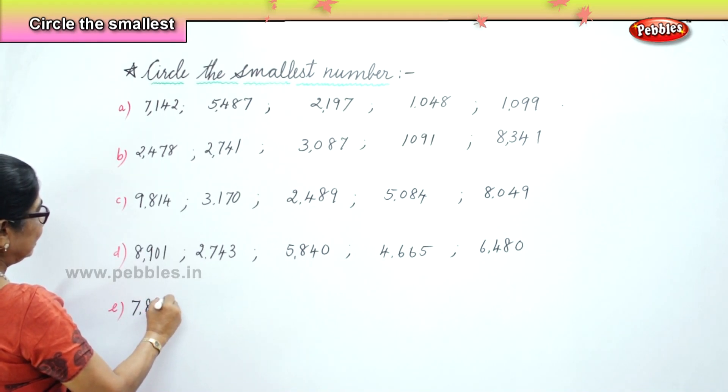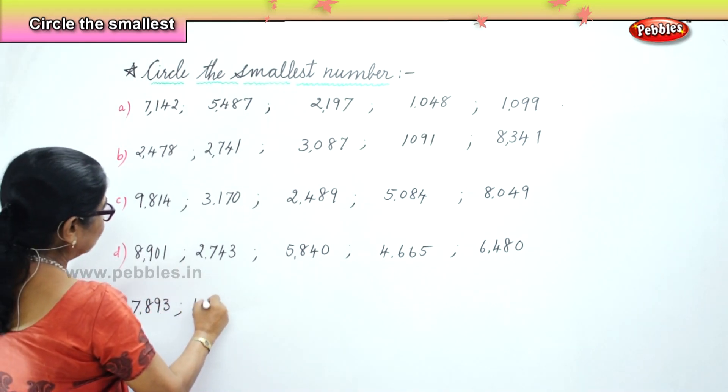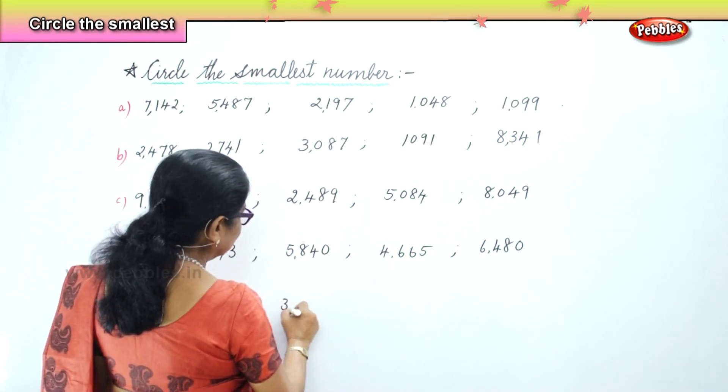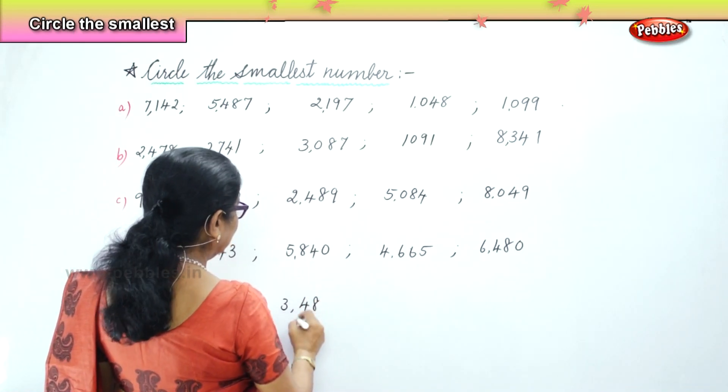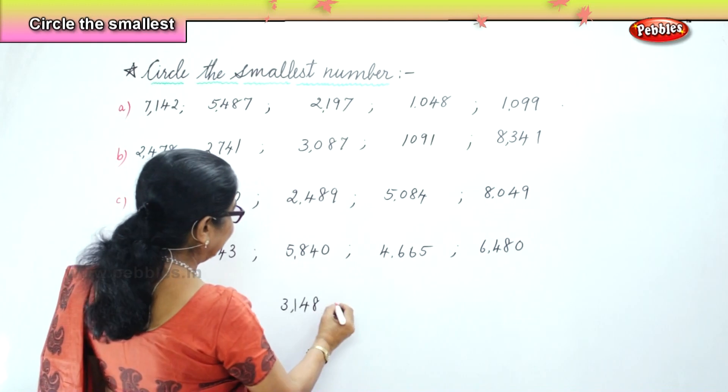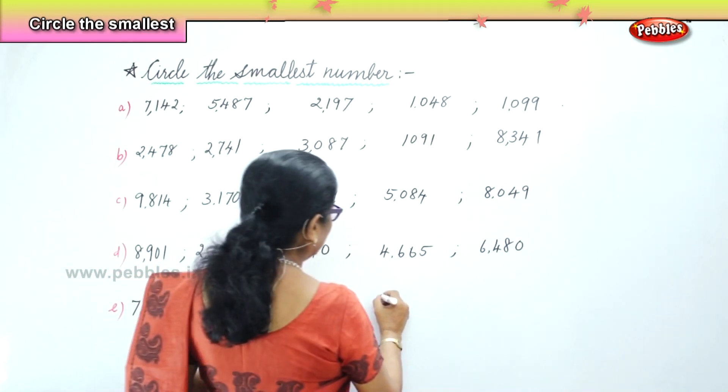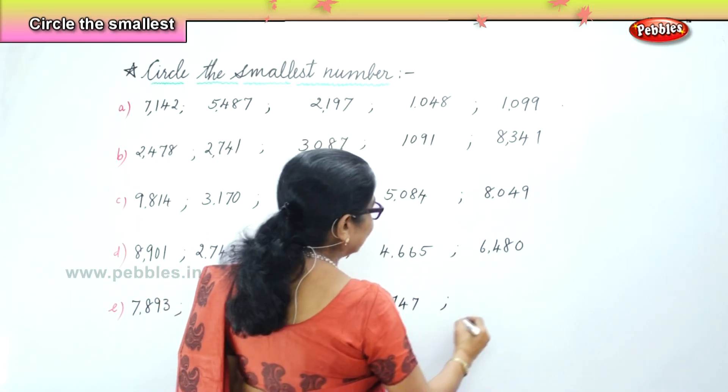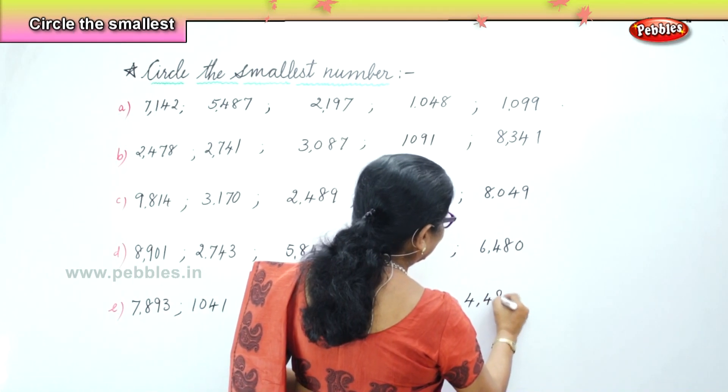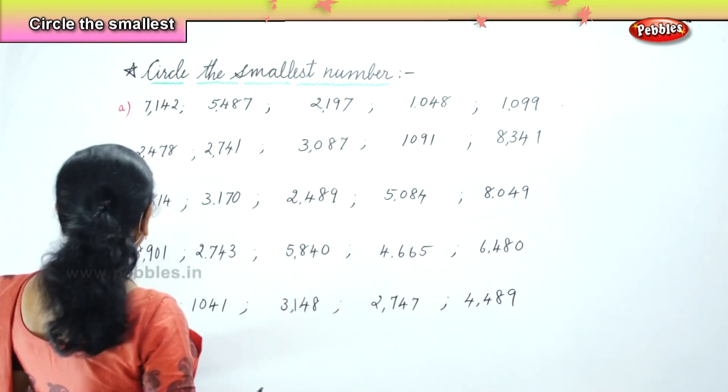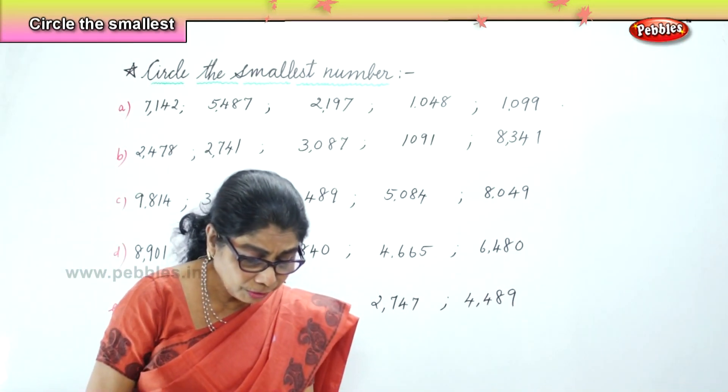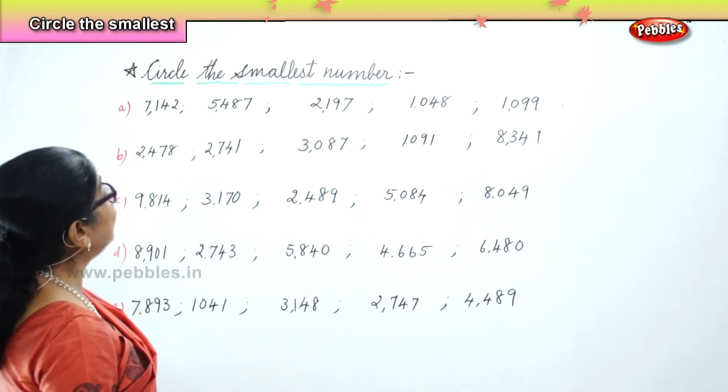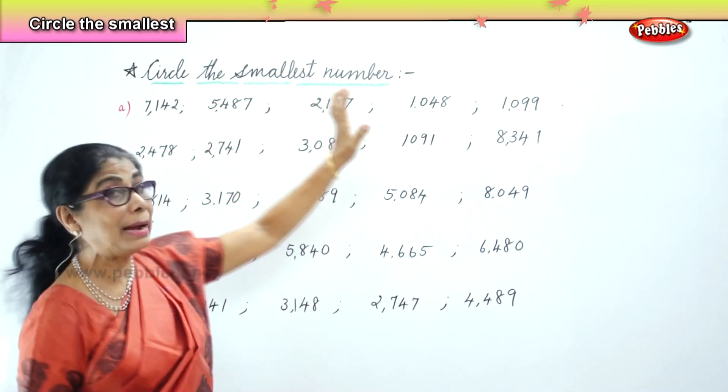Fifth set: 7,893, 1,041, 3,148, 2,747, 4,489. So you have five sets of numbers and you need to look at all five numbers before we decide on the smallest among the five.